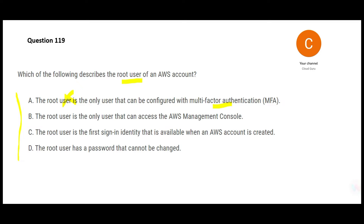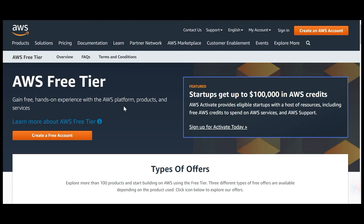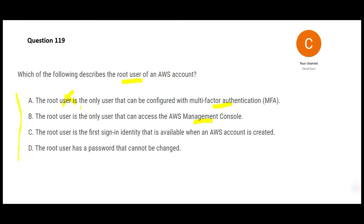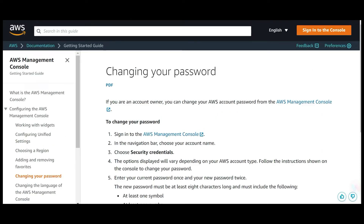Option B says the root user is the only user that can access the management console — that is wrong. You can have a different user who is not a root user and still access it. So B is wrong. Option C says the root user is the first sign-in identity that is available — that is correct. Option D says the root user has a password that cannot be changed — no, you can change the password of a root user.